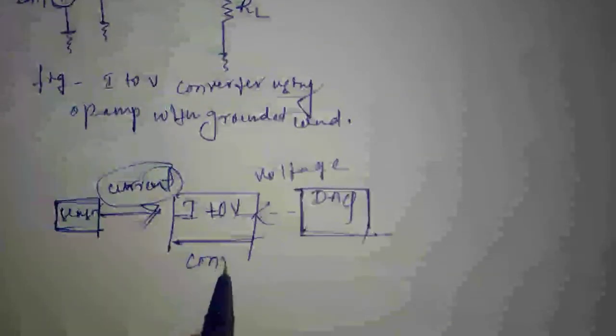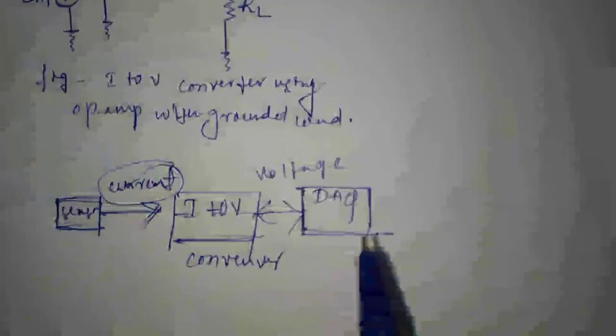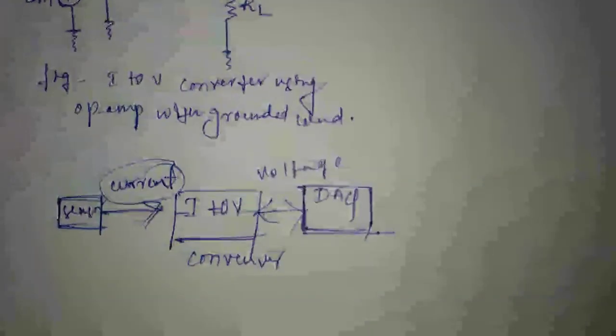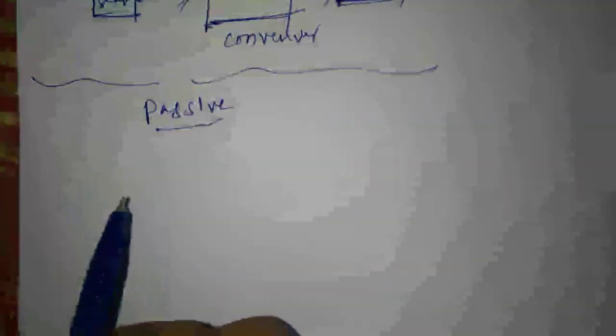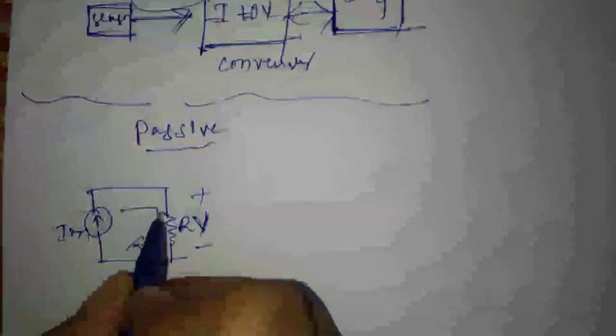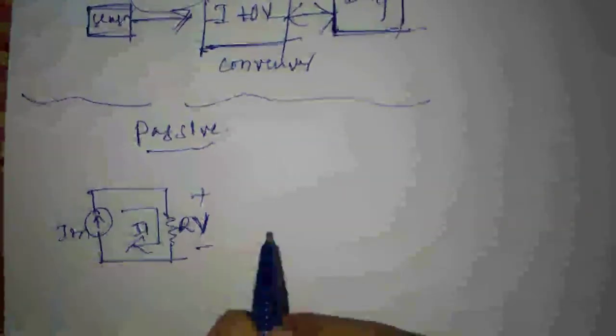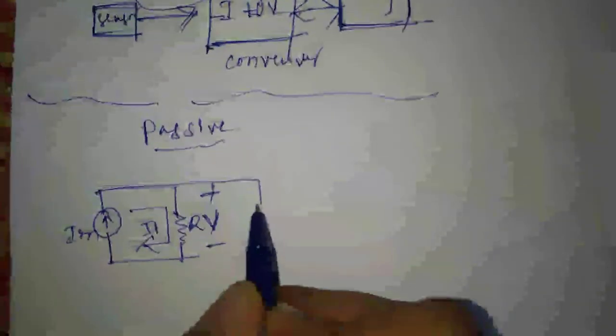For this reason I need to convert this current into voltage by having a current to voltage converter in between, and then store it into the data acquisition system. Conventionally, what we learned earlier using passive circuits — where we use only resistors and capacitors with no active elements like op-amp — if you connect a current source in parallel with a resistor, the current will be converted into voltage.